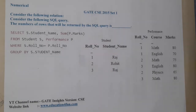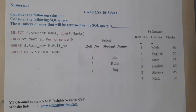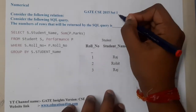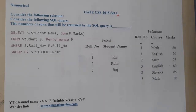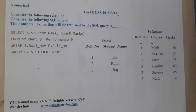Hello guys, we are back with our next lecture. In this lecture, let us go through the next question. This question belongs to GATE CSE 2015 Set 1. The given question is: consider the following relational tables, execute the query, and find how many rows will result at the end.